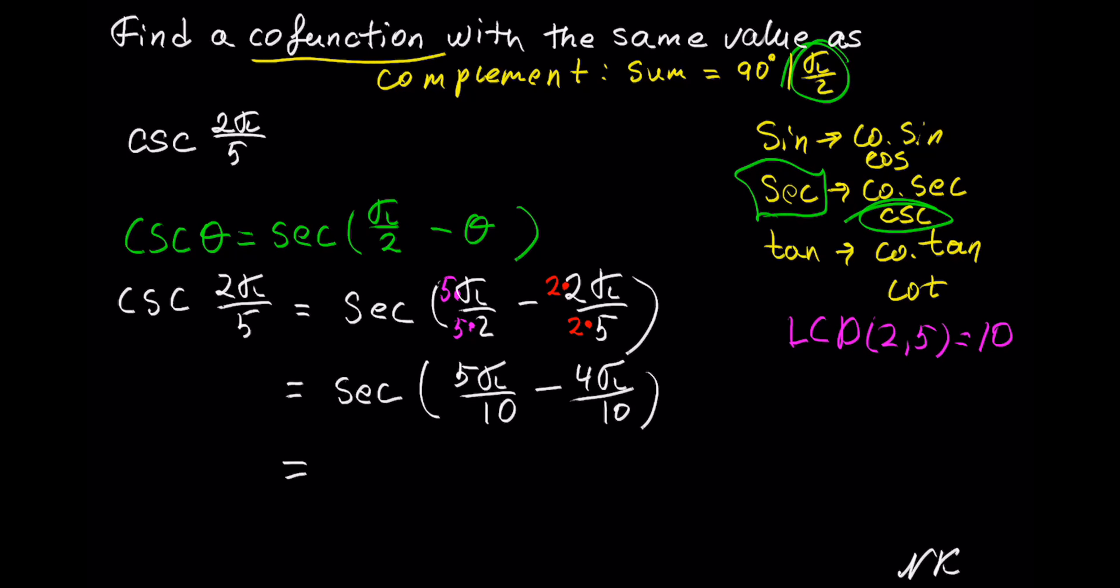Now we can combine these two fractions over a common denominator. We have secant of 5π minus 4π, and we divide those by 10.